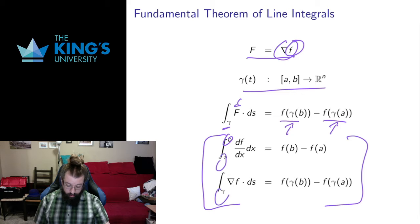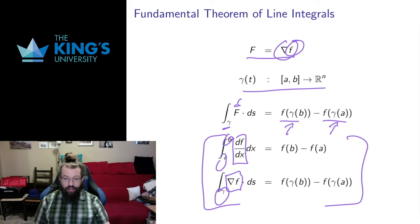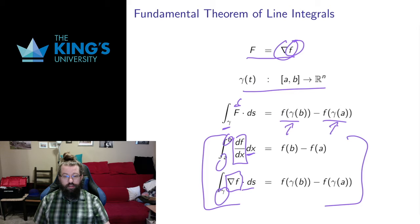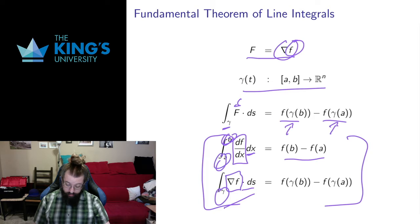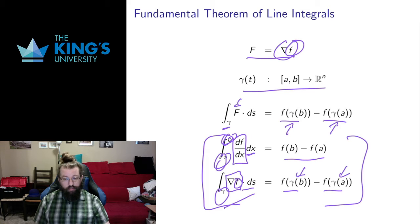Here I have an interval from a to b; instead of an interval I now have a curve. Here I have a derivative; instead of a derivative I now have the gradient, which is a kind of differential operator. Integrating the variable x, I need a dot product here because the gradient is a vector field, so I get a line integral. Evaluate at the end minus evaluate at the start — the potential at the end of the curve minus the potential at the start of the curve. Very similar kind of setup.